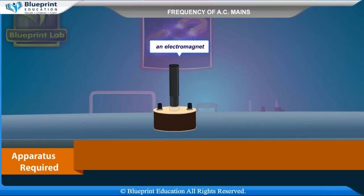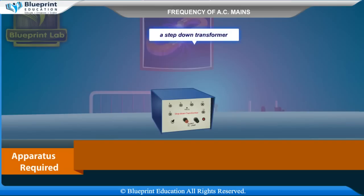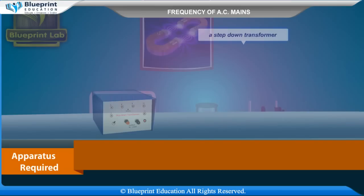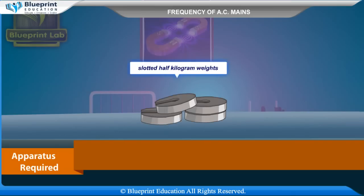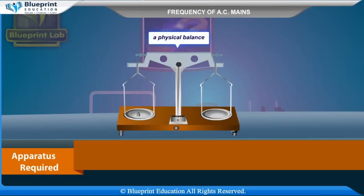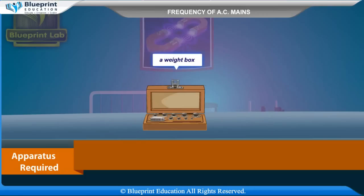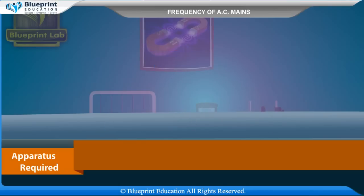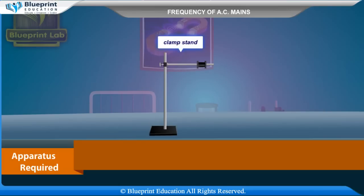Additional apparatus required: an electromagnet, a step-down transformer, a hanger, slotted half-kilogram weights, a physical balance, a weight box, a meter scale, and a clamp stand.